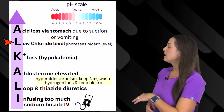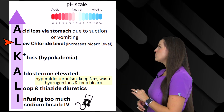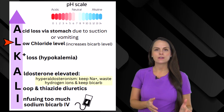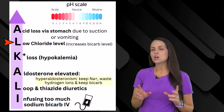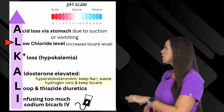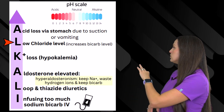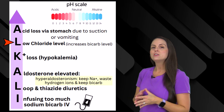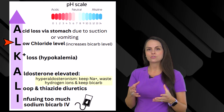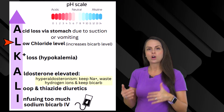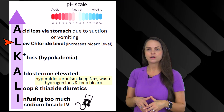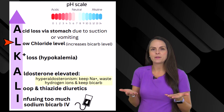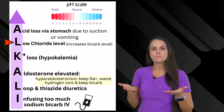Then we have L for low chloride level. When we have a low chloride level in the body, this causes our kidneys to start to decrease excretion of bicarbonate. So when we decrease excreting bicarbonate in our urine, that's actually going to raise the levels in our body. When we have too much base, it's going to neutralize those acids.